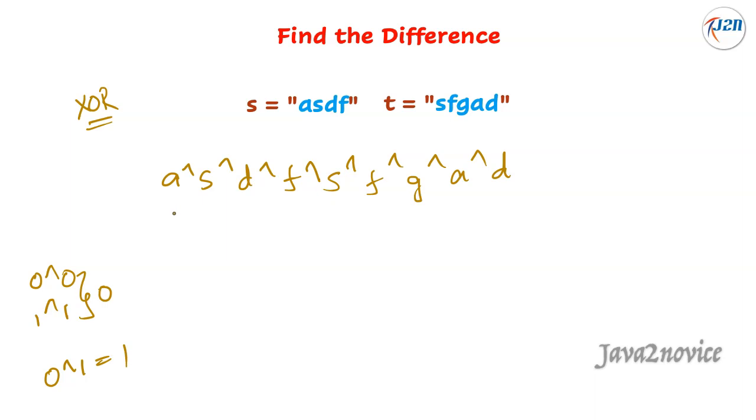Similarly, when we apply bitwise XOR operator on these numbers, on these ASCII values, it returns 0 for same numbers. So here, A, A will return 0, S, S will return 0, D, D will return 0, F, F will return 0. Finally, bitwise XOR on 0 and G will return G. This is the difference. G is the extra character.